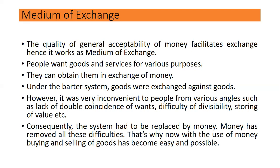People want goods and services for various purposes and they can obtain them in exchange. Under the barter system, goods were exchanged against goods. However, it was very inconvenient from various angles, such as the lack of double coincidence of wants and difficulty of storing value. That is why, with the use of money, buying and selling of goods has become easy and possible.